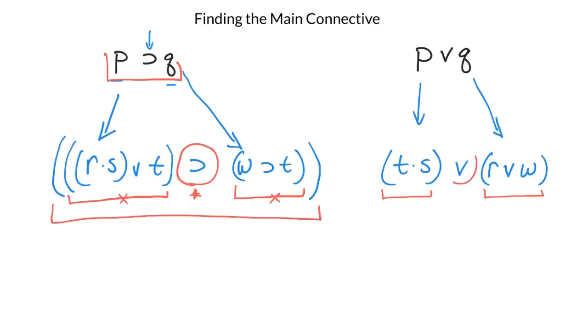Now if I were to take and add a few other things, so let's say I have the same thing, T and S or R or W, and I put these outside parentheses on here, notice that doesn't change anything. It just means this is all one big expression, just like this is all one expression.